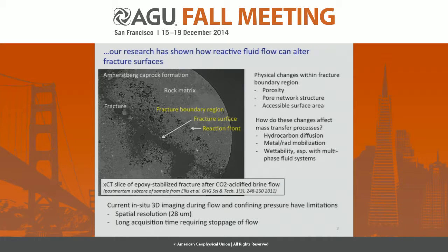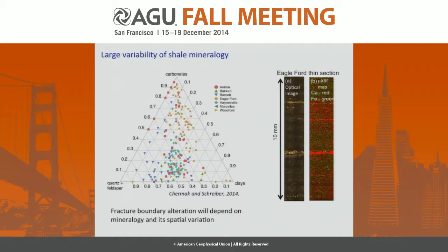What we want to be able to do is understand how these changes affect things such as hydrocarbon diffusion, metal and radioactive element mobilization, and wettability within these zones. The fracture interface — the current imaging capabilities, when you're looking at a large core, we're limited in resolution, especially when trying to collect multiple data sets within a reasonable period. It's critical to maintain the ability to resolve things spatially because of the large variability of shale mineralogy.